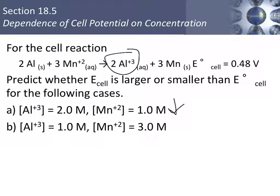In letter B, manganese ion is 3 molar, which is right here. We now have more reactant than product. Our cell potential will increase.